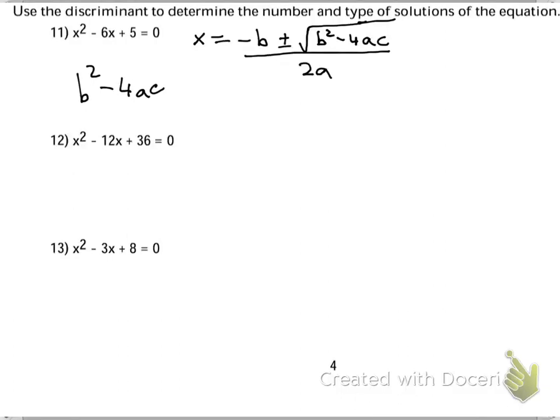Use the discriminant to determine the number and type of solutions of the equation. The discriminant in the quadratic equation formula is b squared minus 4ac. Here's how it works. Let's try b squared minus 4ac on this here.